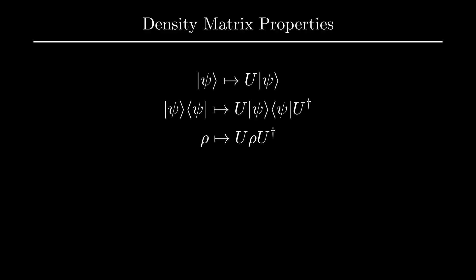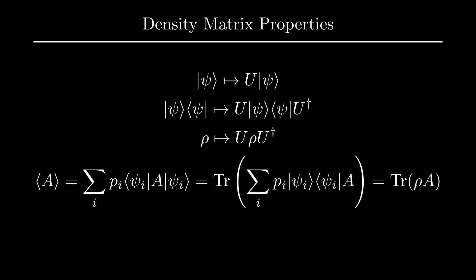Another important thing to know is that the expected value of an operator with respect to a density matrix is simply the trace of rho times that operator. To see why this is intuitively the case, we can expand rho out in terms of its spectral decomposition and use cyclicity of trace to get this weighted average of expected value expressions with respect to each pure state that makes up our density matrix.